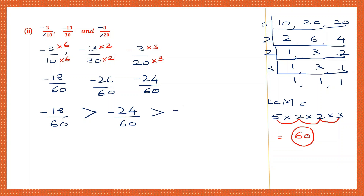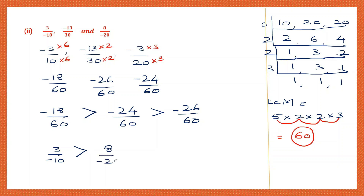Going back to the original question: minus 18 by 60 is 3 by minus 10, which is the greatest. This is greater than minus 24 by 60, which is 8 by minus 20. And that is greater than minus 26 by 60, which is minus 13 by 30. So this is our final answer.